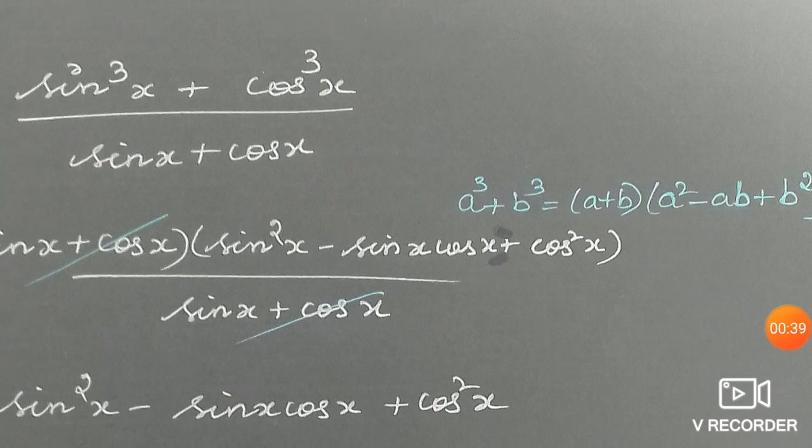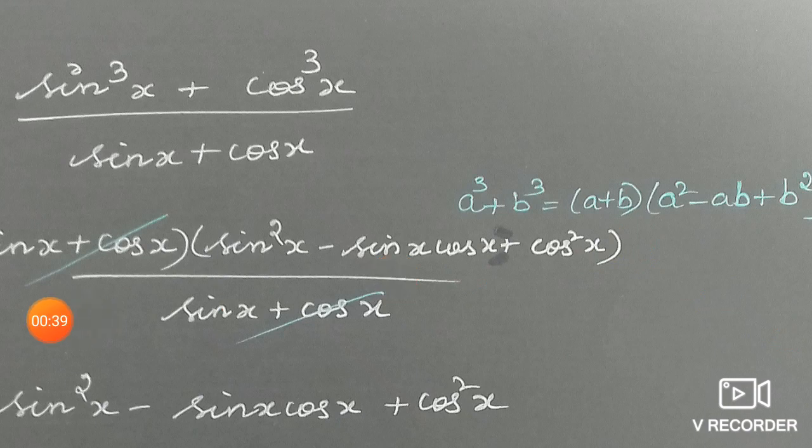Now, apply this identity, a plus b, that is sin x plus cos x into a square minus ab plus b square, sin square x minus sin x cos x plus cos square x.